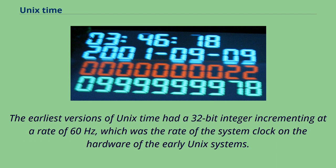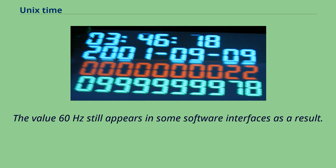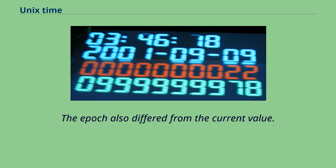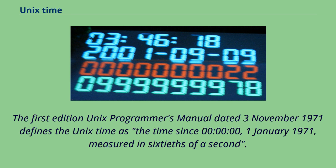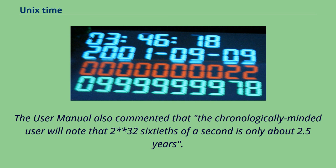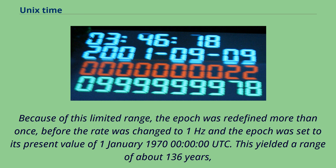The earliest versions of Unix time had a 32-bit integer incrementing at a rate of 60 Hz, which was the rate of the system clock on the hardware of early Unix systems. The value of 60 Hz still appears in some software interfaces as a result. The epoch also differed from the current value. The first edition Unix Programmer's Manual, dated November 3, 1971, defines Unix time as the time since 00:00:00 January 1, 1971, measured in 60ths of a second. The manual commented that the chronologically minded user would note that 2^32 / 60 of a second is only about 2.5 years. Because of this limited range, the epoch was redefined more than once, before the rate was changed to 1 Hz and the epoch was set to its present value of January 1, 1970, 00:00:00 UTC.